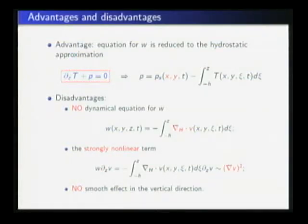The disadvantages are as follows. First, since there is no dynamical equation for w, w can be only solved from the incompressibility condition. In our case, it can be expressed in this form. From here, we can see that there is one derivative loss for the velocity V. And as a result, the strongly nonlinear term, this one, seems like the square of one derivative of V. From the nonlinearity, this term is stronger than the standard convection term. Moreover, since we consider a system with only horizontal viscosity, there is no smoothing effect in the vertical direction.